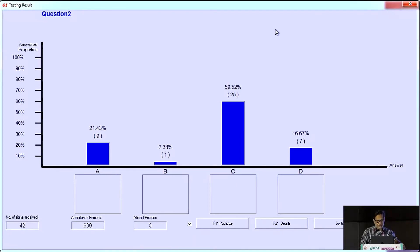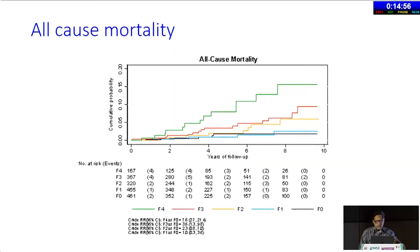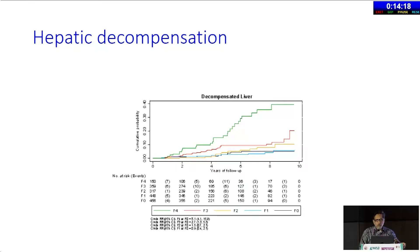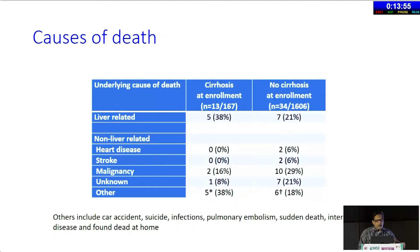Let's see the data. These are data published in the New England Journal about a year and a half ago — the largest dataset of almost 2,000 patients followed prospectively with adjudicated outcomes. As you go from F0 to F4, there is a progressive increase in all-cause mortality, with the biggest increase in those who have cirrhosis. The mortality rate for people with cirrhosis is about 1.76 per 100 patient years of follow-up, and what drives this is hepatic decompensation. Here are actual real numbers.